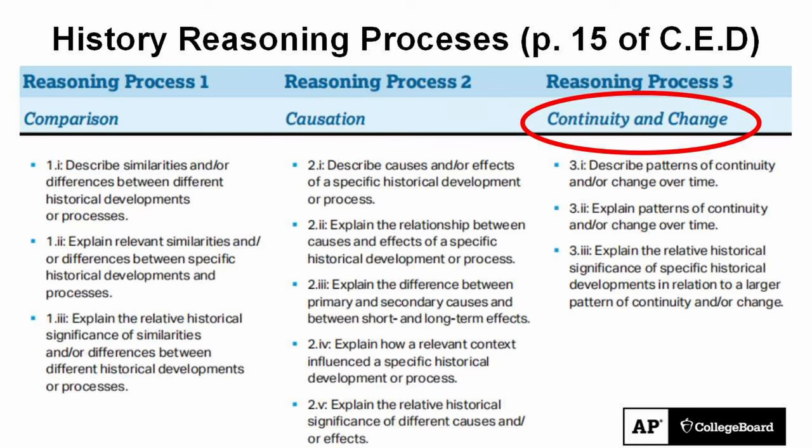So we've done a comparison for all the topics in Unit 1. But we also want to look more closely at the other two thinking processes: causation and continuity and change over time. Let's start with continuity and change. This is why, even though Unit 1 technically begins in 1200, the College Board also wants you to be aware of some of the things that were happening before, so you can see what has continued and what has changed.